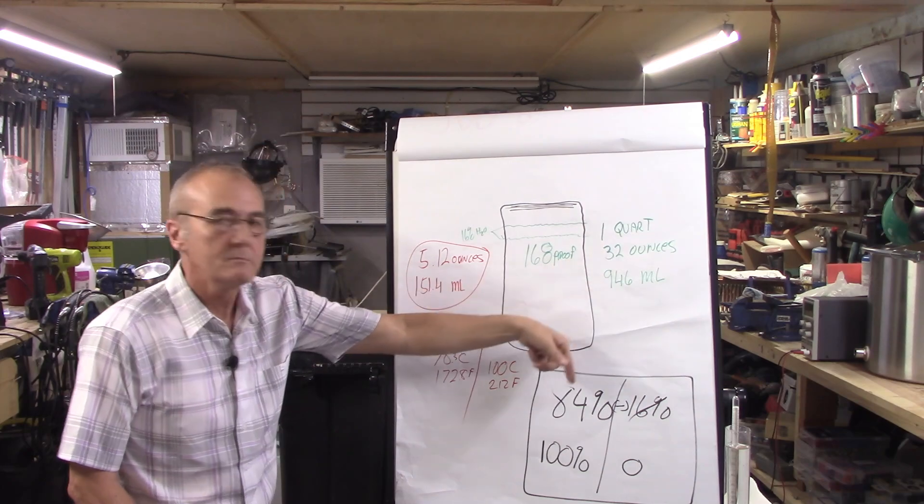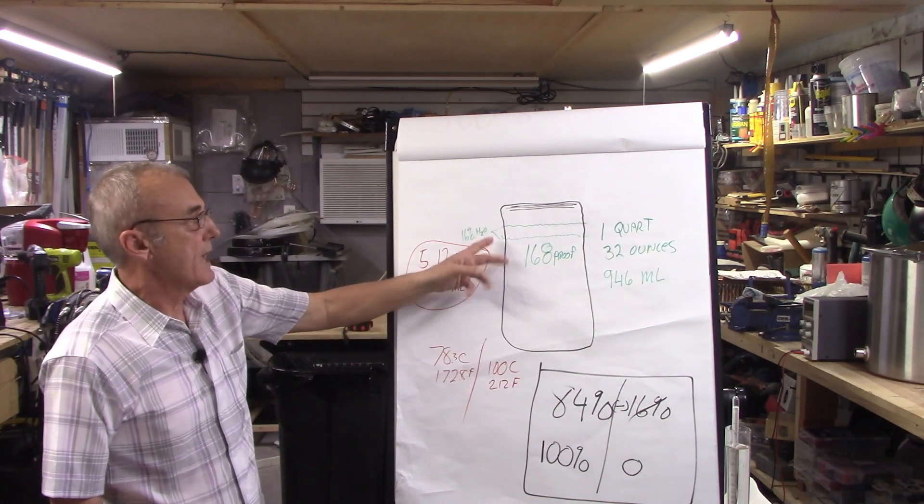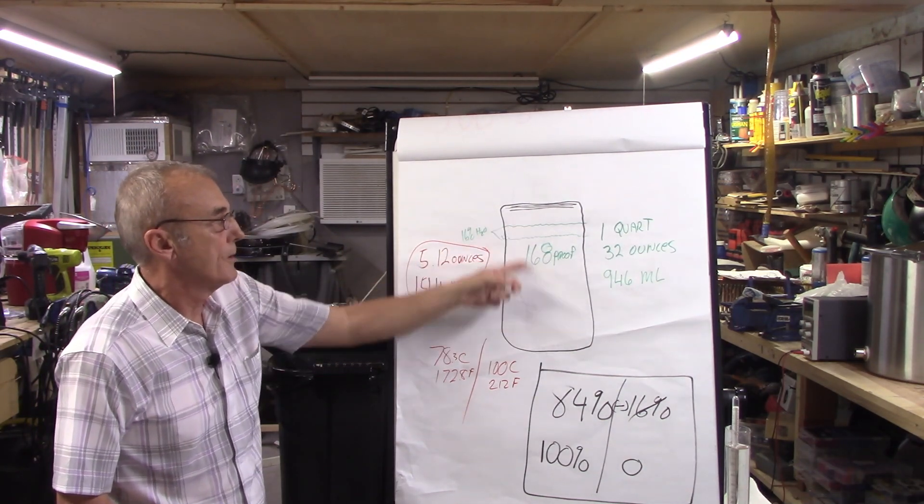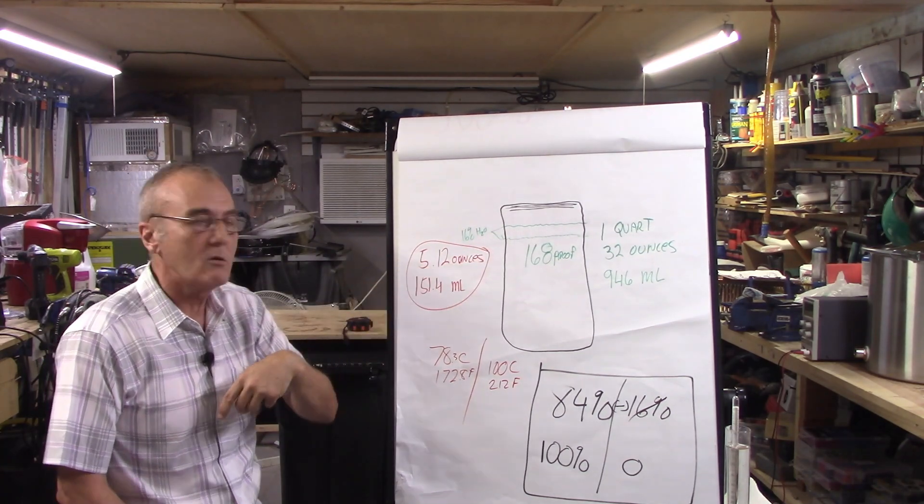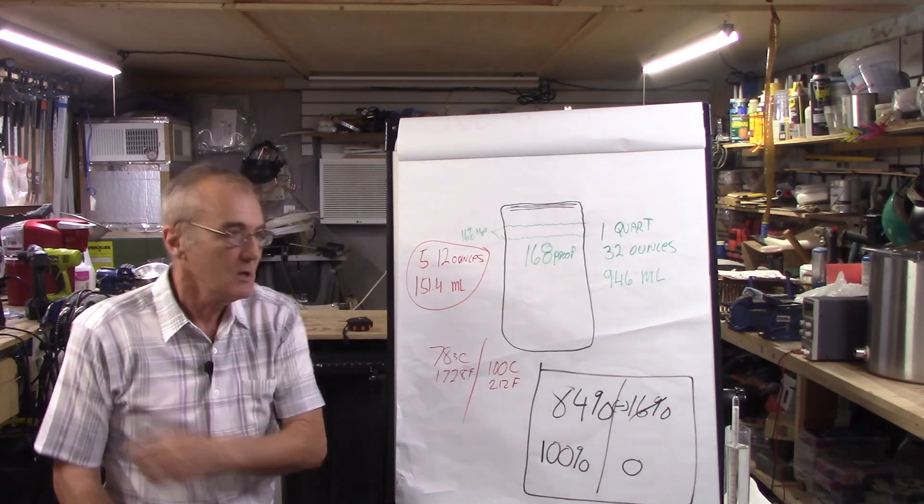In this test cylinder we have 168 proof, that's one quart, 32 ounces. We worked out mathematically that 16% of this is water. So that's 5.12 ounces or 151.4 milliliters. We know that's what brings this to 168.